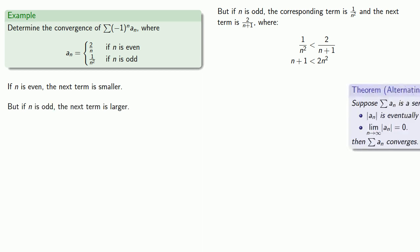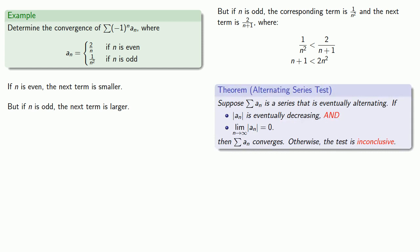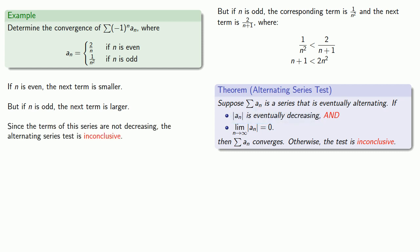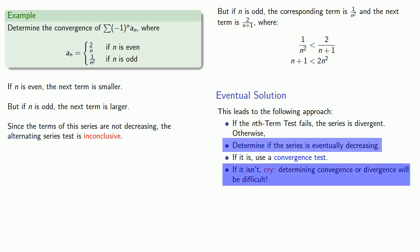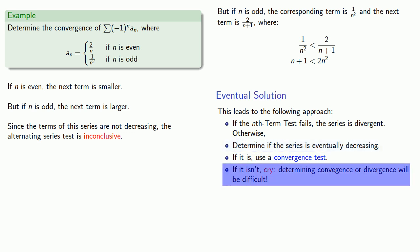But this is a problem. The alternating series test requires that our series be eventually decreasing. Since the terms of this series are not eventually decreasing, the alternating series test is inconclusive. Since the series is not eventually decreasing, this is a harder problem and we need to learn a few more convergence or divergence tests.